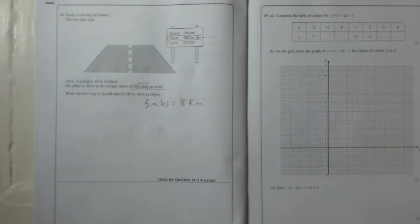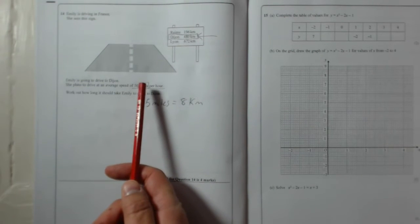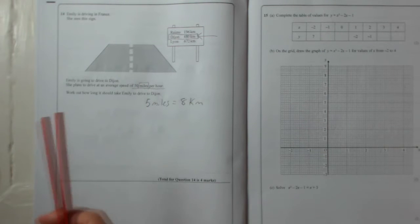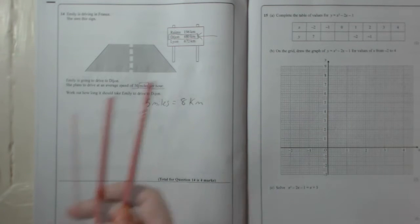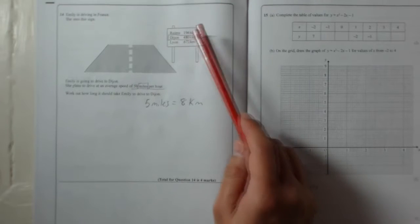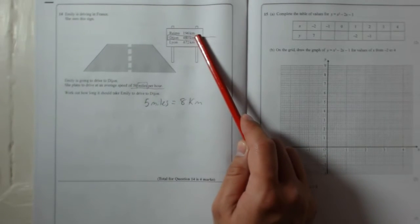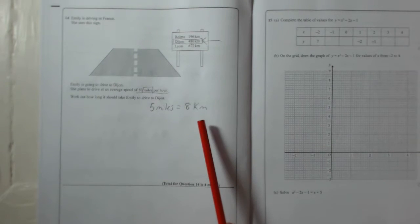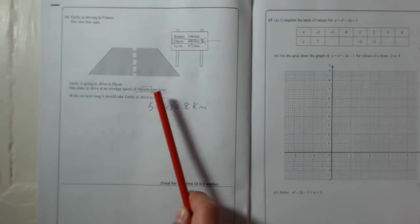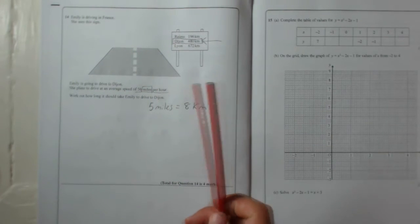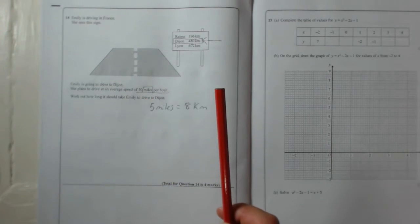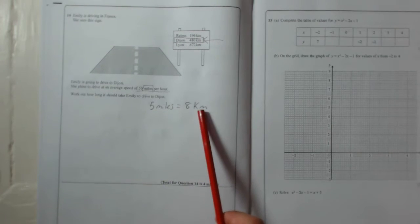Okay, so to do this question we're either going to have to convert the speed into kilometres per hour and then work it out - speed equals distance over time and all that - or we can turn the kilometres into miles. Now because five miles is eight kilometres, 50 miles per hour is 80 kilometres per hour, because 50 miles is 80 kilometres.